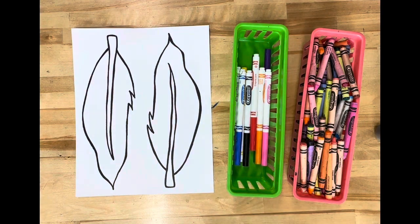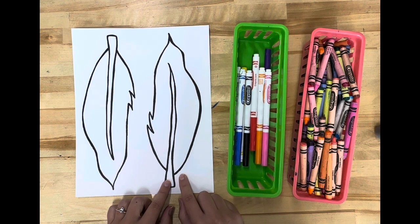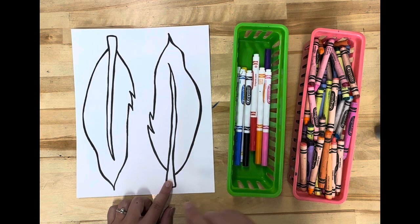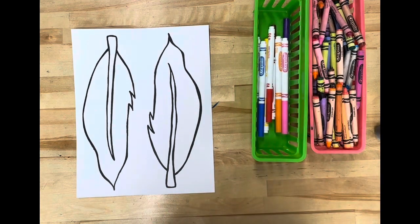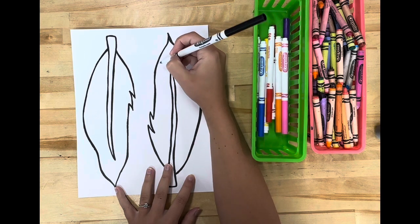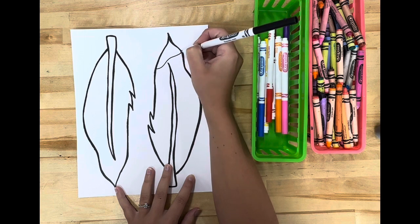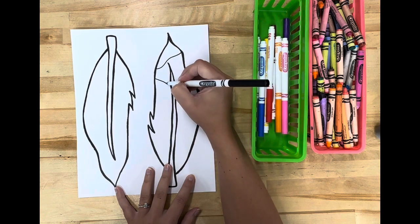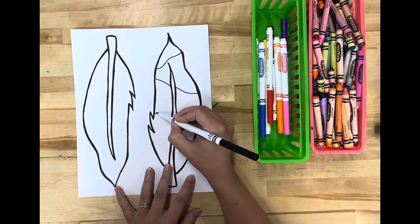Today I am going to practice coloring in my feather and using patterns to color in that feather. Patterns are a design that repeats over and over. My first step is I am going to split my feather into different sections. In each section I am going to have a different pattern.